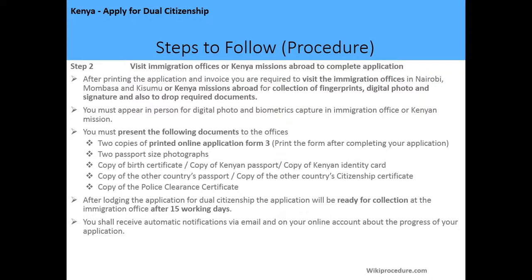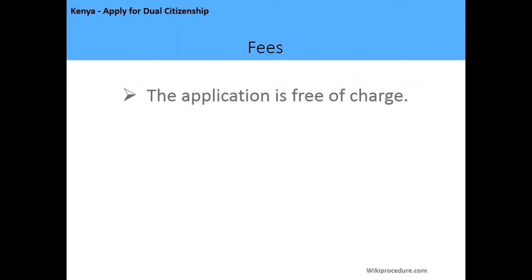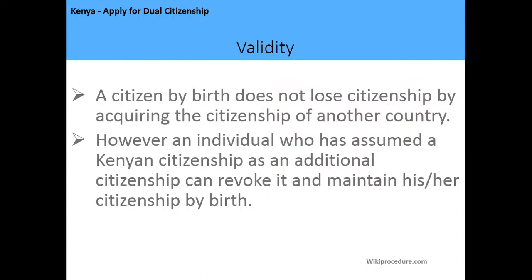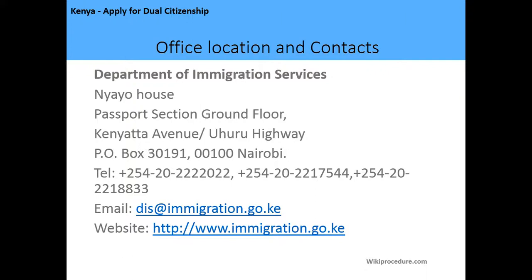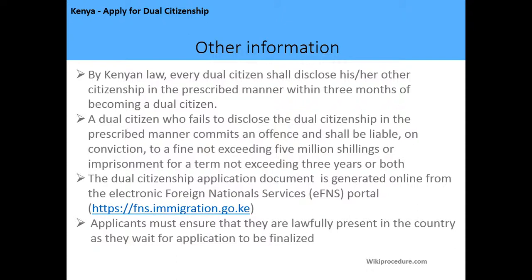Your dual citizenship papers will be ready after 15 working days, and you will be notified to collect them via email or text message. The application is free of charge — there are no fees applicable. Regarding validity, a citizenship by birth does not lose its status upon acquiring citizenship of another country. However, an individual who has assumed Kenyan citizenship as an additional citizenship can revoke it. The processing time is 15 working days. The main office location is Nyayo House in Nairobi, and you can also visit www.immigration.go.ke.